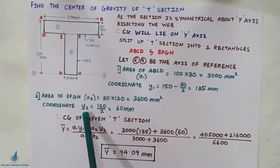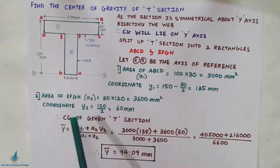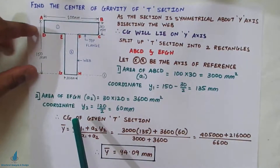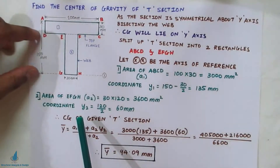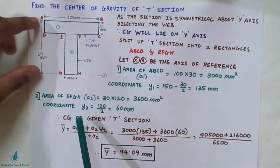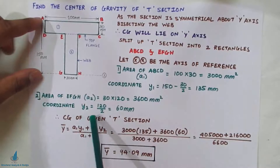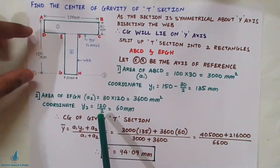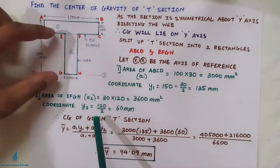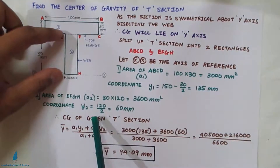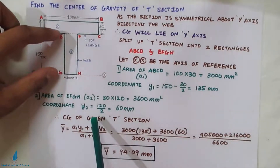The coordinate Y₂ is measured from the bottom-most part, because the reference axis is the bottom-most part of the figure. The entire 150 cannot be used — that was for the whole T-section. So Y₂ = 120 divided by 2. We are finding the coordinate Y₂ of web EFGH.